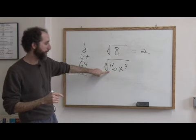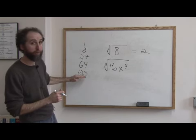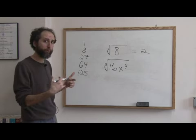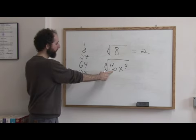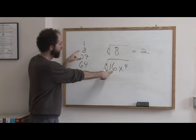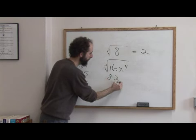So when we look at this number here, we're going to say, do any of these go into it? And you start at the top. The higher the better, because then you'll have less reducing later. Or less work later. So does 125 go in? No. Does 64 go in? No. Does 27 go in? No. Does 8 go in? Yes. So we break 16 apart as eight times two.